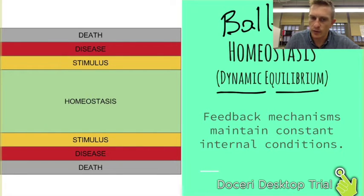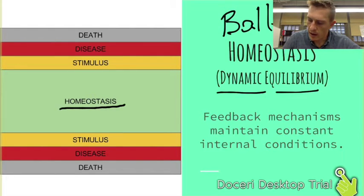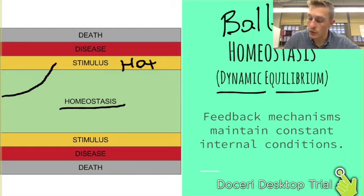Homeostasis — shown here in green — means all is good: I'm a healthy organism working pretty well. At any given moment something might change, like the temperature gets too hot. That's going to be a stimulus, and what my body does to respond is sweat, and that brings me back into homeostasis.